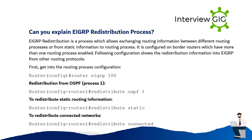Can you explain the EIGRP redistribution process? EIGRP redistribution is a process which allows exchanging routing information between different routing processes, or from static information to a routing process. It is configured on border routers which have more than one routing process enabled. The following configuration shows redistribution into EIGRP from other routing protocols.